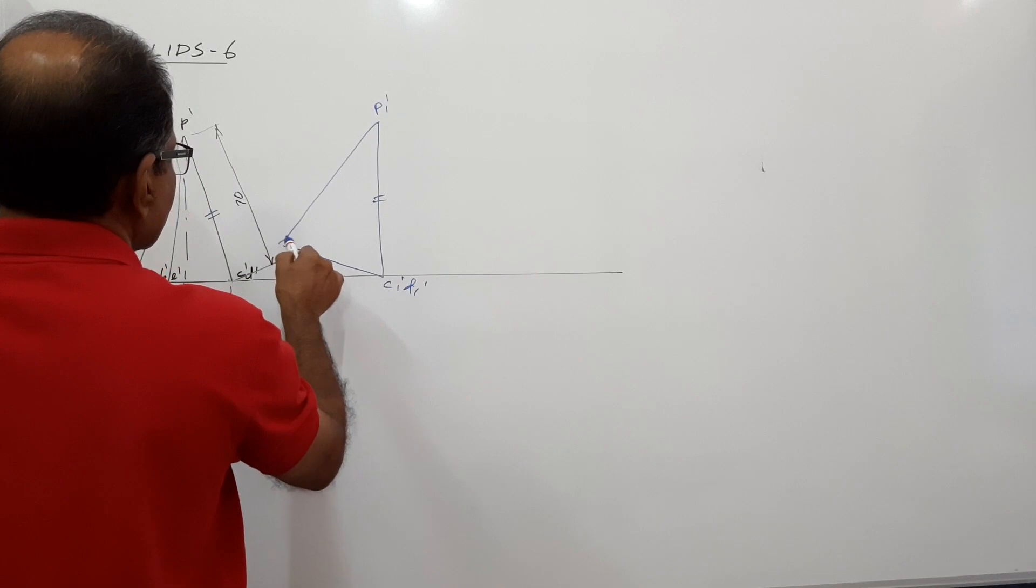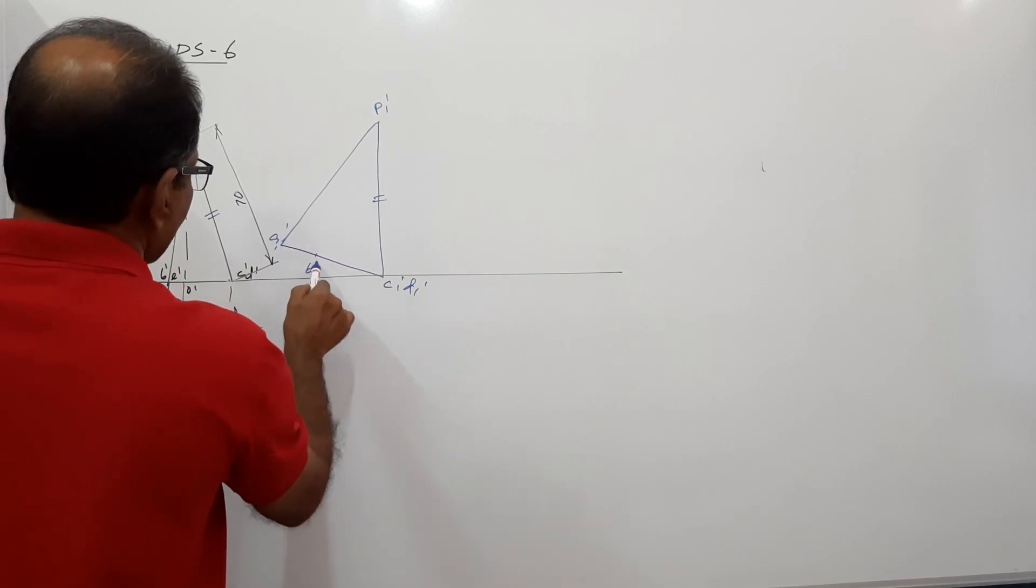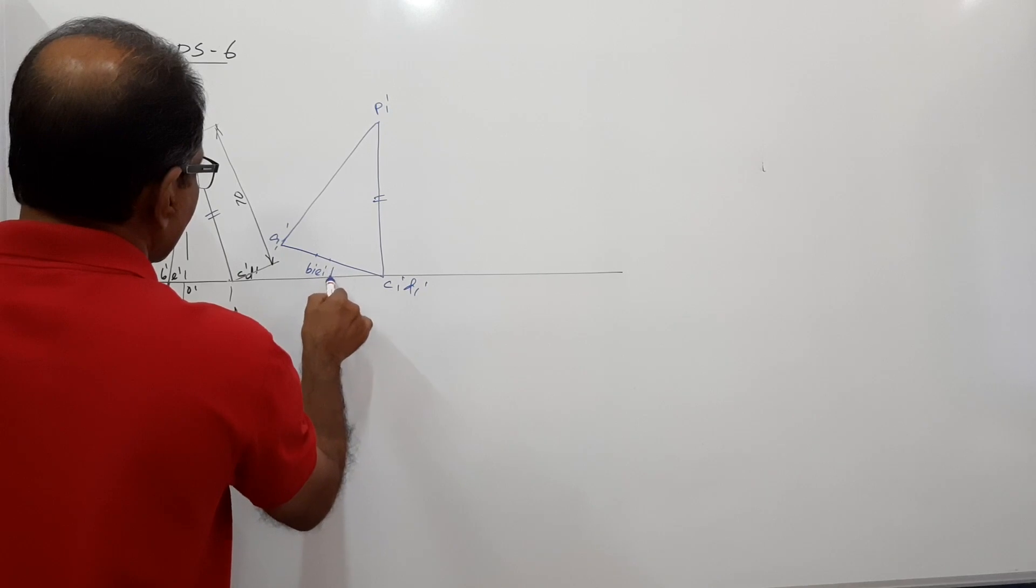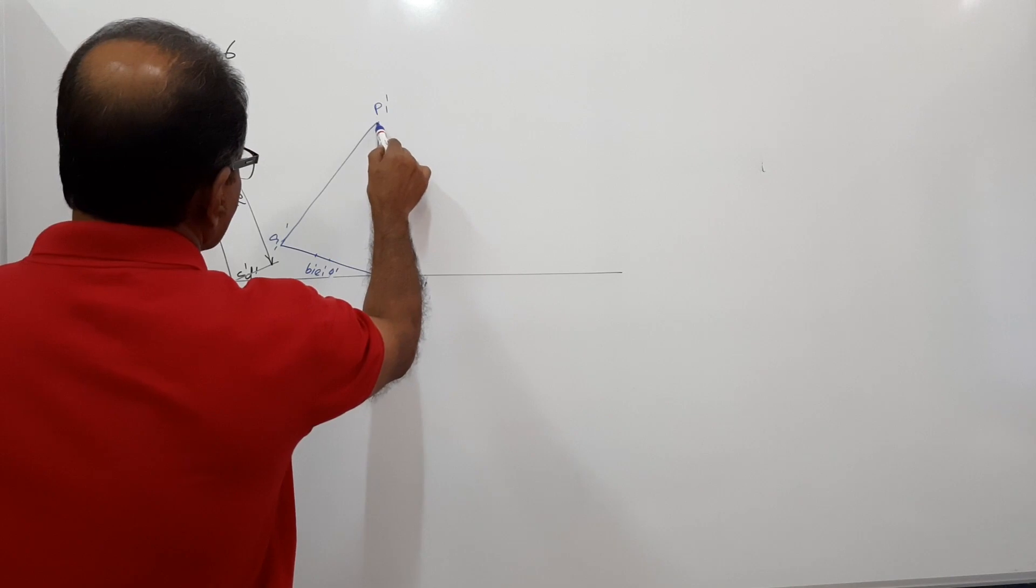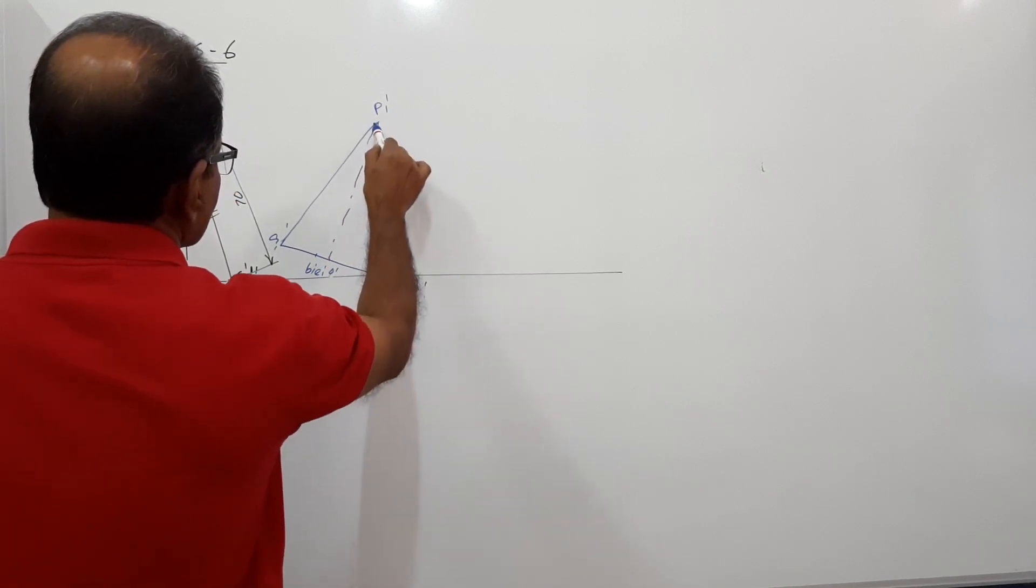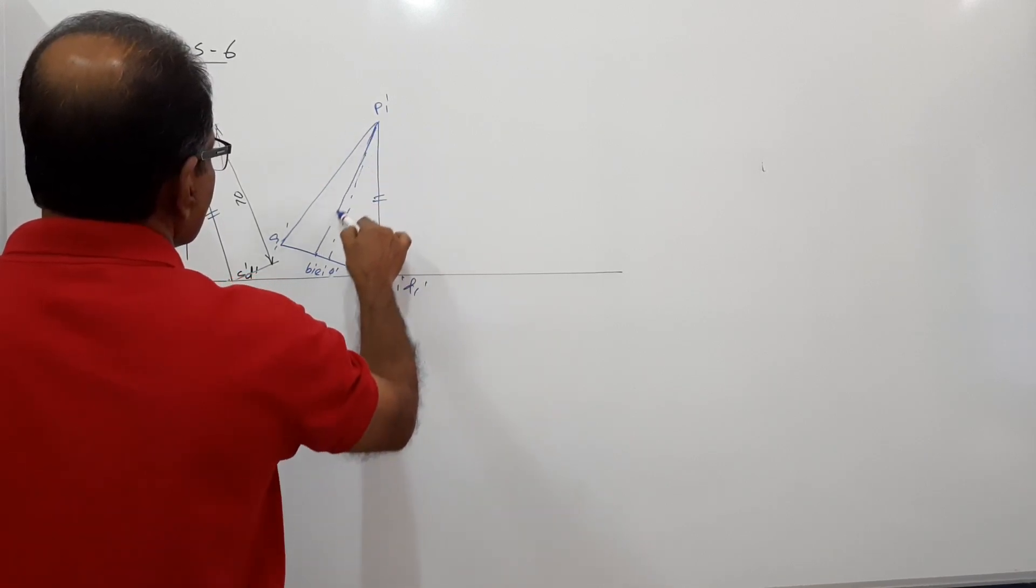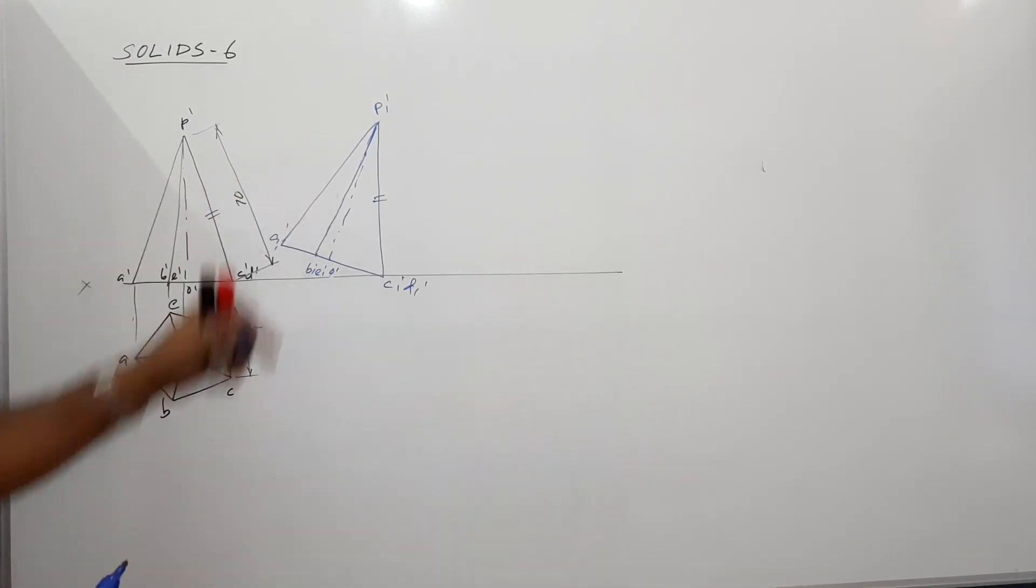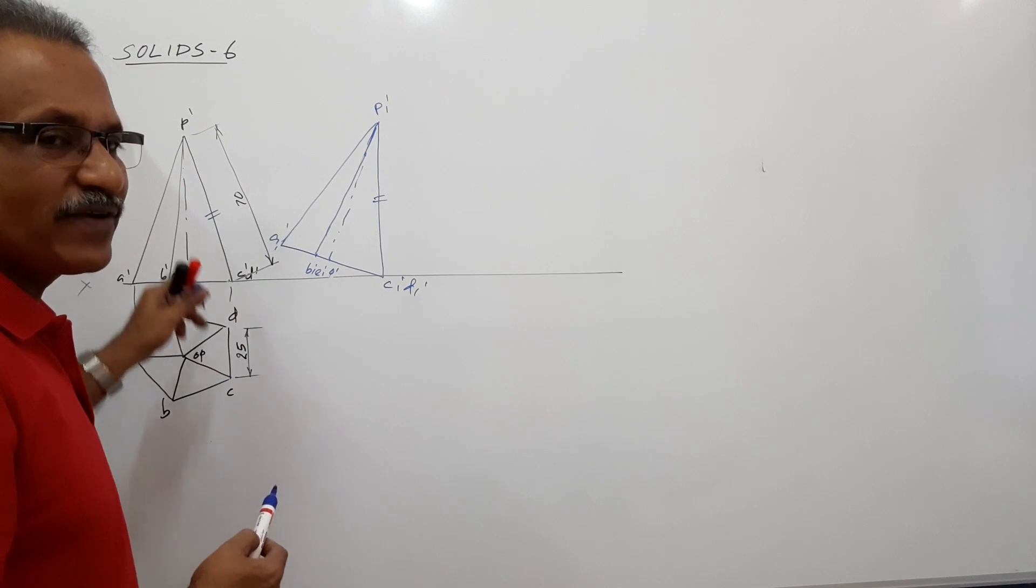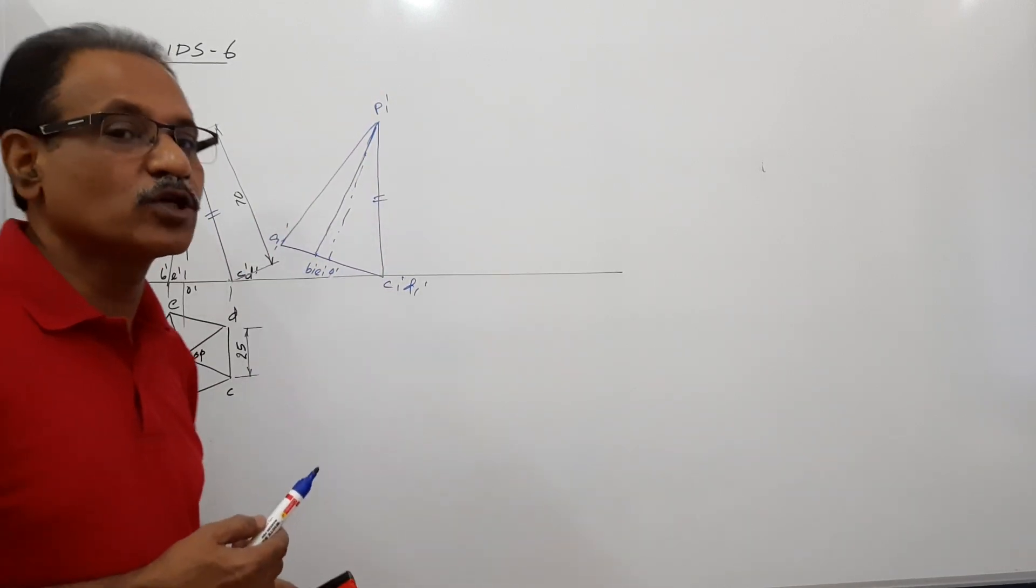Complete the elevation. This is A1 dash. Somewhere here is D1 dash, E1 dash, somewhere here is O1 dash. This is the axis. You have got the elevation redrawn in such a way that the triangular face C dash D dash P dash is perpendicular to both HP and VP. Draw a new plan.